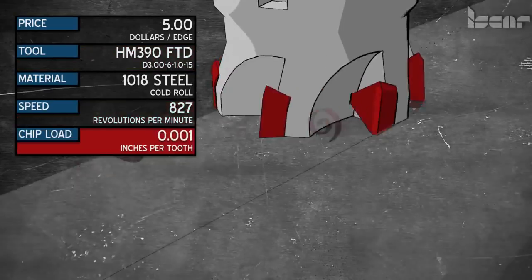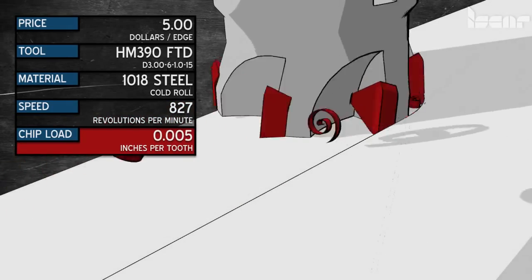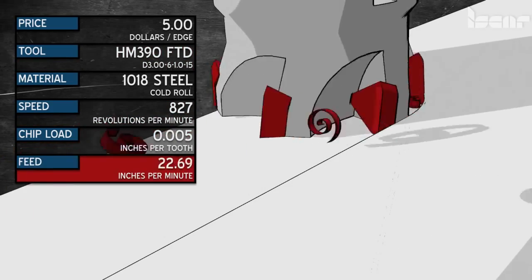Now this cutter has six inserts and we're going to run 5 thousandths per insert. So that will be 827 times 6 times 5 thousandths is 24.81 inches per minute. Now we are ready to cut. But how do we cut?